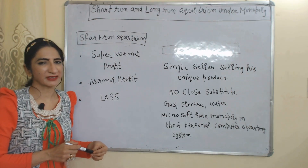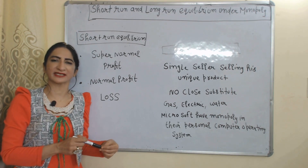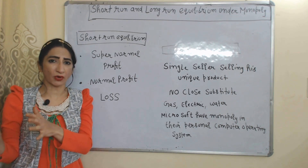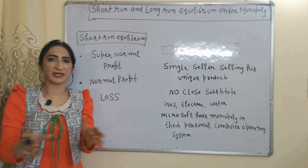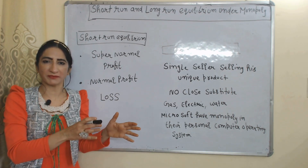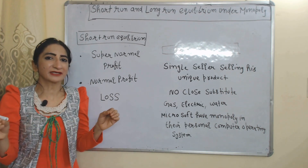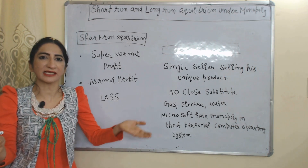Hello everyone, my name is Nimisha. I hope you all are staying healthy. Today we are going to talk about short-run and long-run equilibrium under monopoly market. Monopoly is a market condition where a single seller is selling his unique product.